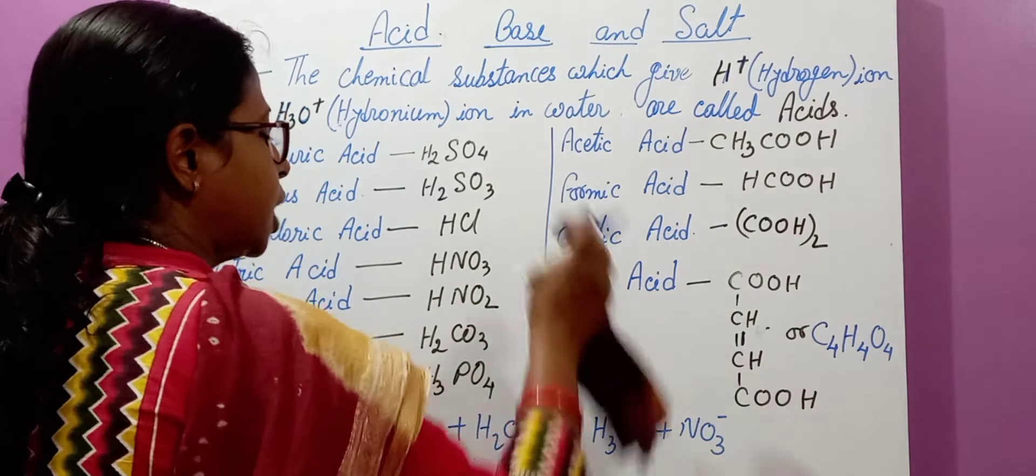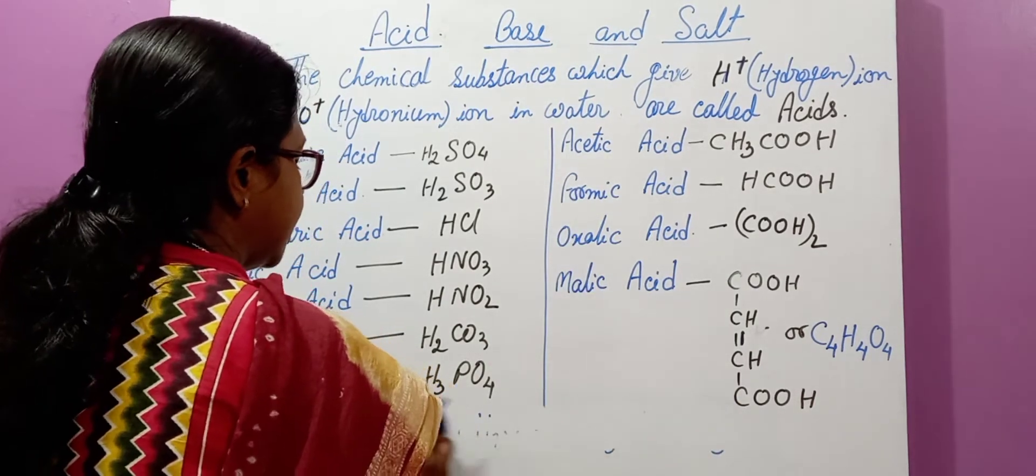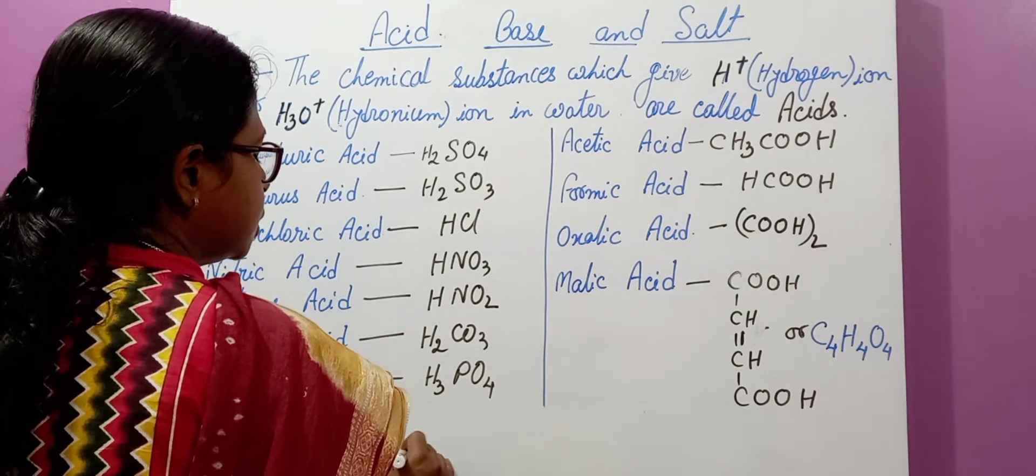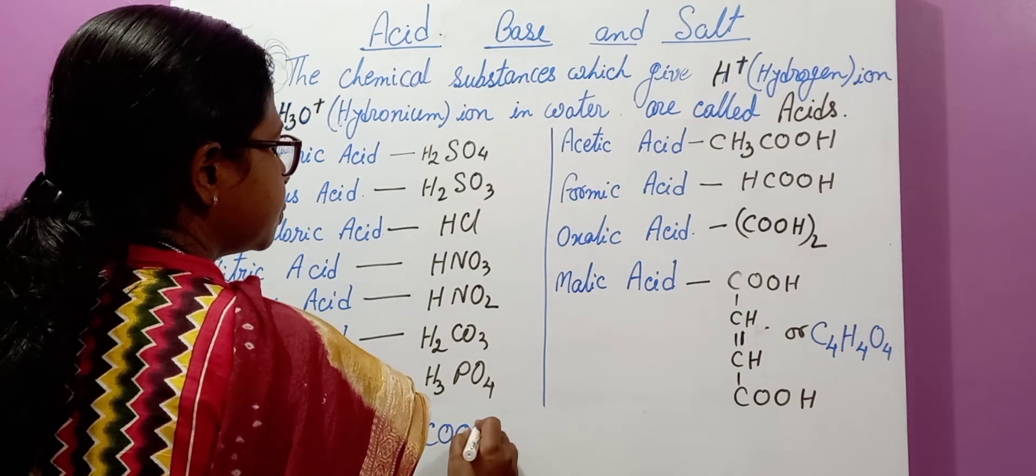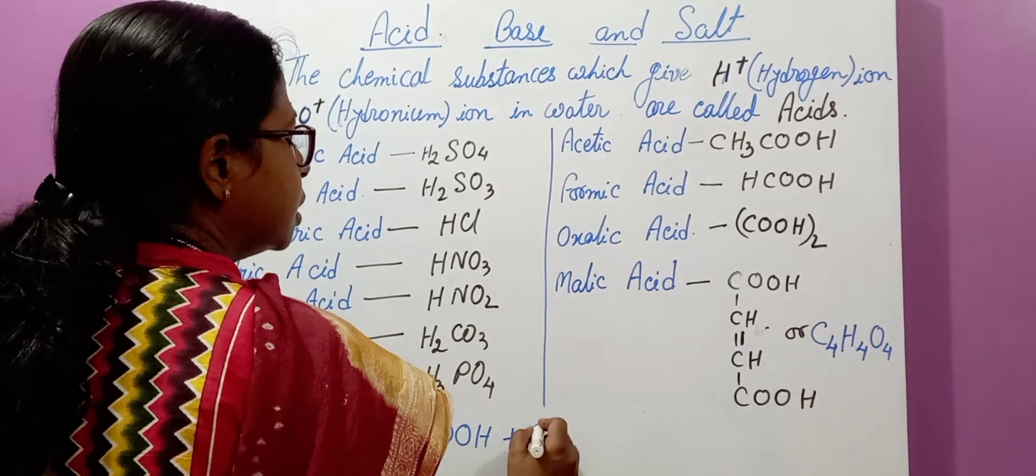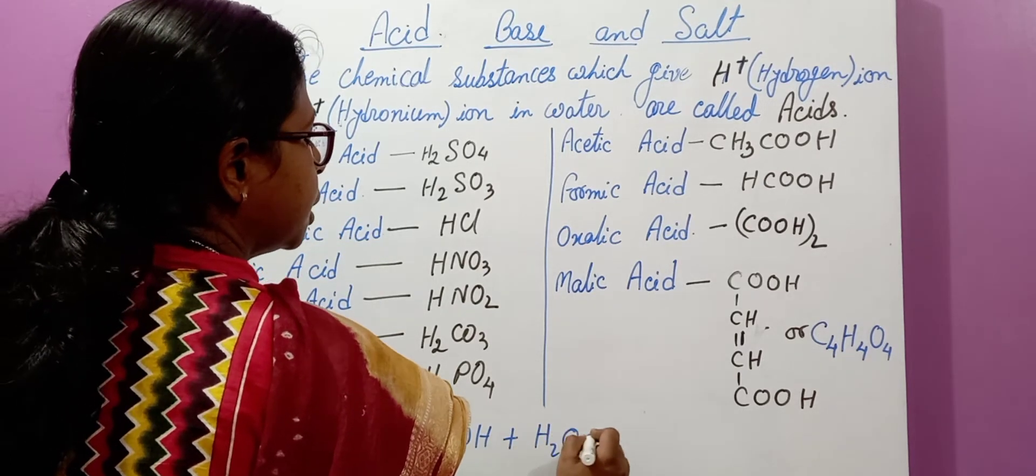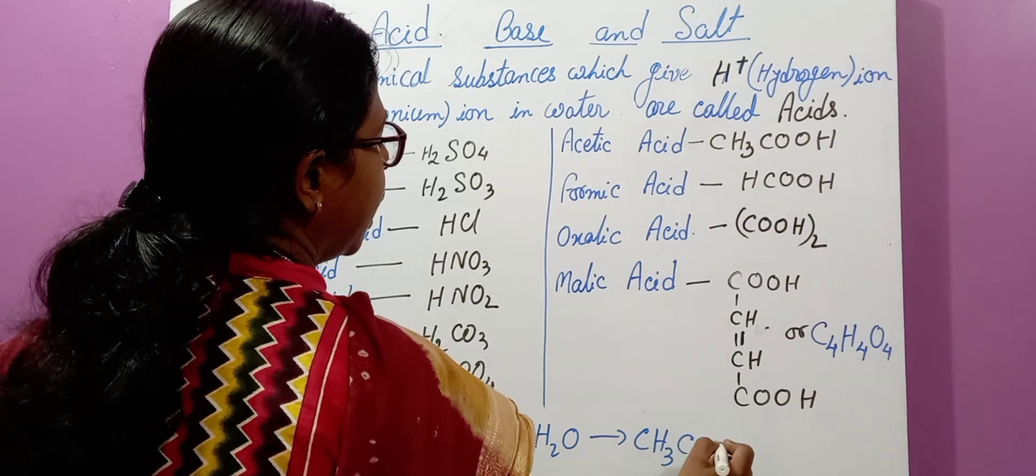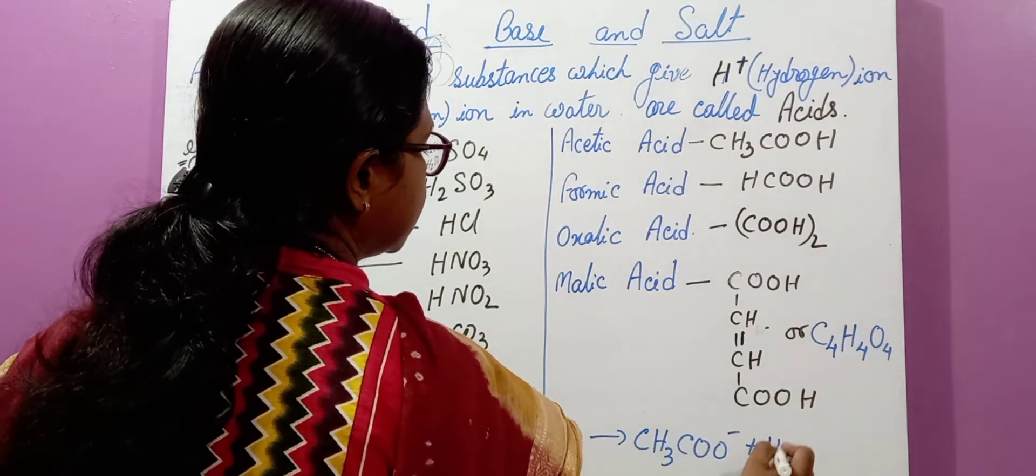Similarly, we take another example like acetic acid. What is the formula? CH3COOH plus H2O. This gives CH3COO- and H3O+.